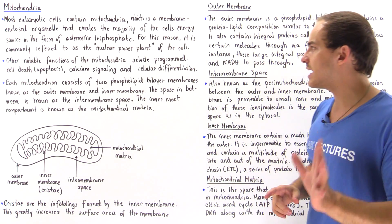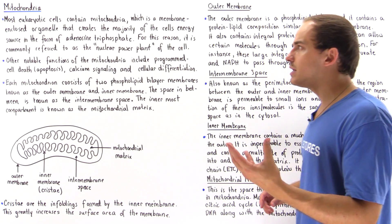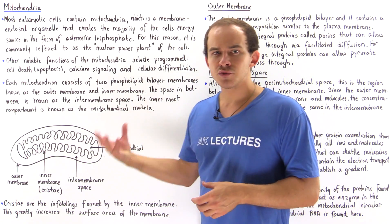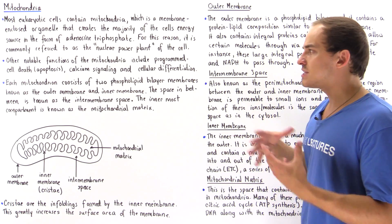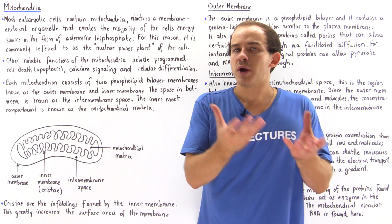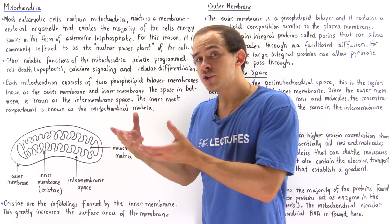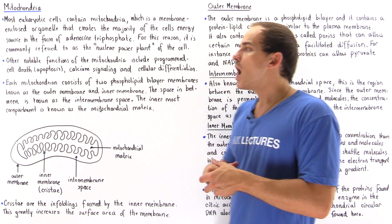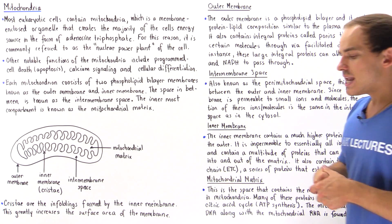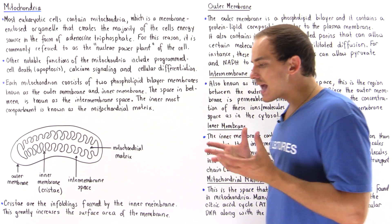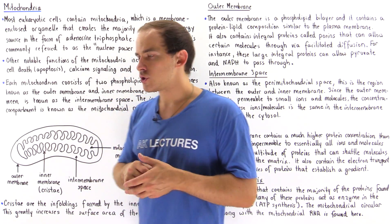Cellular differentiation is another important concept in embryology, which we will cover later. It is basically the ability of mitochondria to direct the differentiation of cells from an undifferentiated cell to a differentiated cell, such as a muscle cell or a nerve cell. Now, what exactly is the structure of a single mitochondrion?